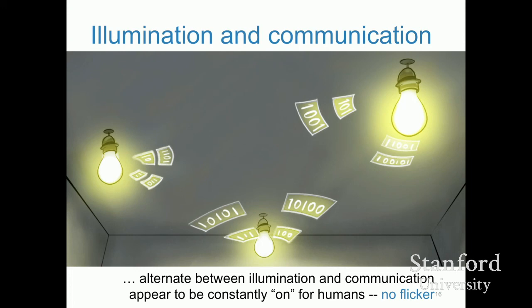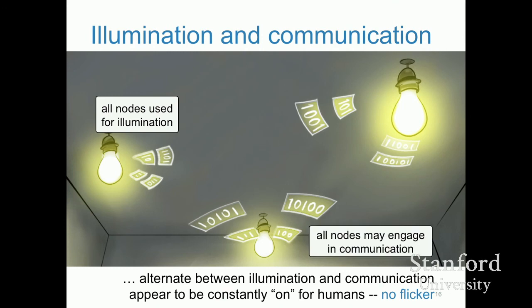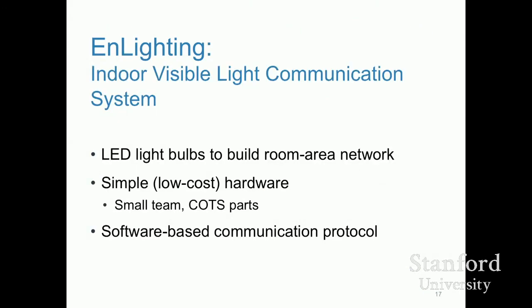Yes, the light bulb we use is less bright because half the time it's used for communication, but that's a problem you can fix — just buy a more powerful bulb or put two together. One goal is that humans in the room not be affected. Either all nodes illuminate or all communicate — that's basically how our system works. We call it nLighting, an indoor visible light communication system based on LED light bulbs that builds a room area network.